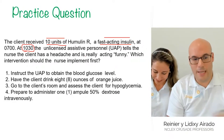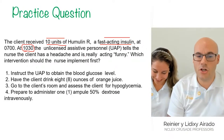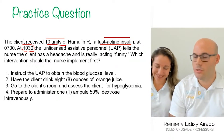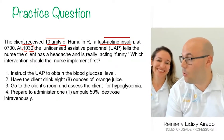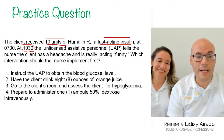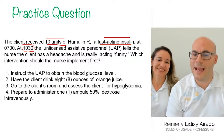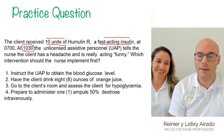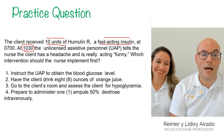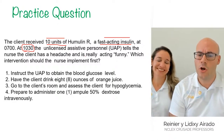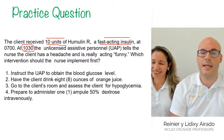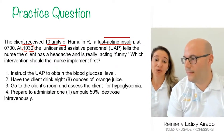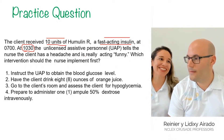Option 2: have the client drink eight ounces of orange juice. Option 3: go to the client's room and assess the client for hypoglycemia. Option 4: prepare to administer one ampoule of 50% dextrose intravenously — very aggressive.